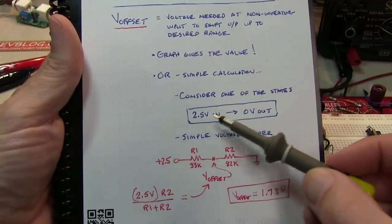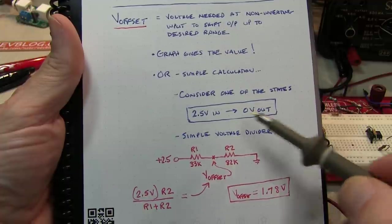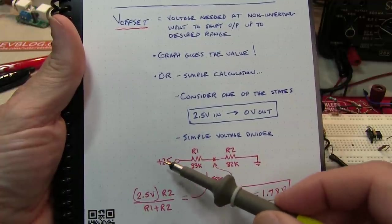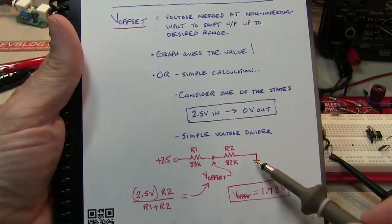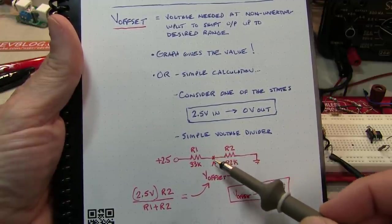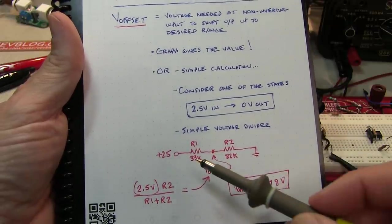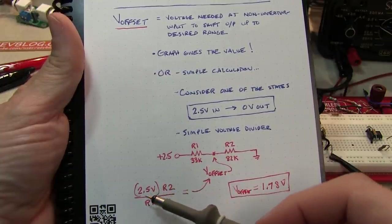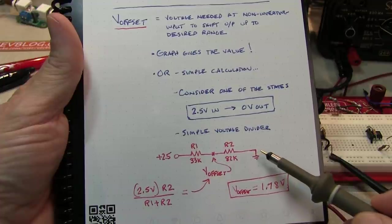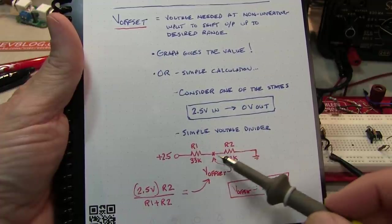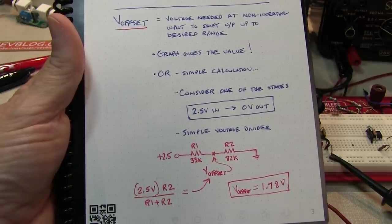We want to compute it a little bit more precisely. Let's just consider one of the states. We know that 2.5 volts in, we want 0 volts out. That's just a simple voltage divider. We have 2.5 volts at one side, we have R1 and R2 going to effectively ground or 0 volts at this end. Because the op amp input doesn't draw any current, we can consider this just a simple voltage divider. So we can simply run this calculation: 2.5 volts divided by R1 plus R2 gives me the current through the stack, multiplied by R2 gives me the voltage across R2. That tells us the offset voltage is 1.78 volts.